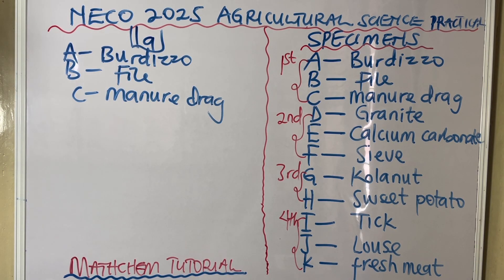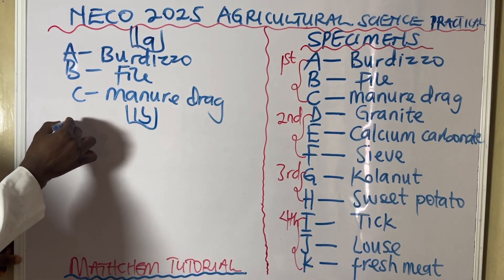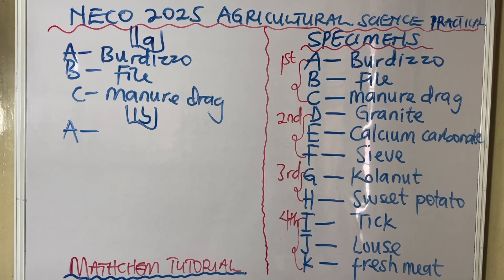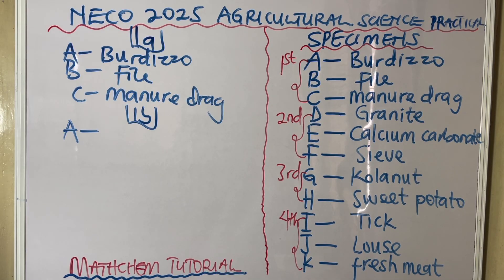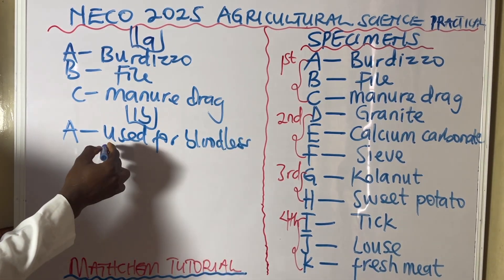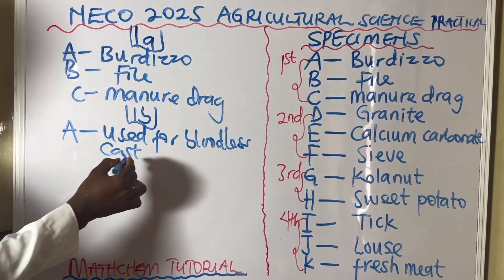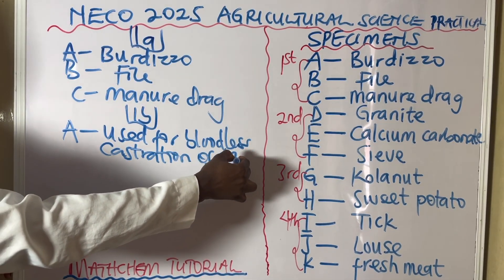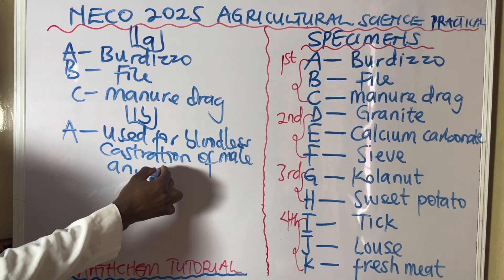Another question they can ask is to state one use of each specimen. Specimen A — the Burdizzo — is used for bloodless castration of male animals. It is used to remove the testes from the scrotum so that those male animals will not be able to reproduce again and will just keep getting fatter. Bloodless means when they castrate those animals, there will be no blood.